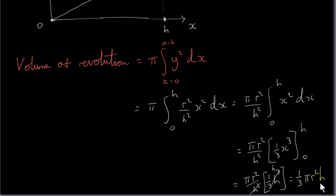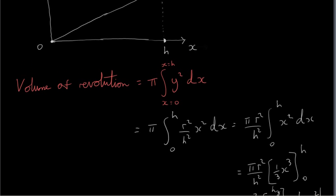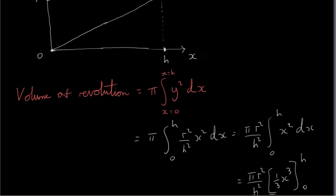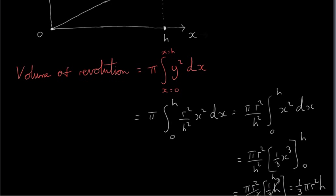The interesting thing about the volume of a cone is that it's actually 1 third the volume of a cylinder with the same radius and the same height. A cylinder could be generated by rotating this horizontal line about the X axis, and we would end up getting π R squared H. But the cone is actually 1 third the volume of the cylinder.